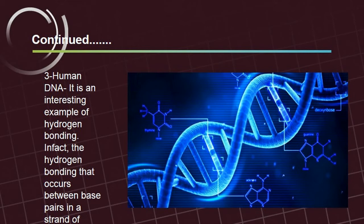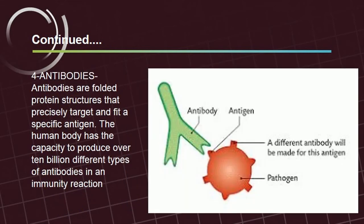Helix shape. Four: antibodies. Antibodies are folded protein structures that precisely target and fit a specific antigen. The human body has the capacity to produce over 10 billion different types of antibodies in an immunity reaction.